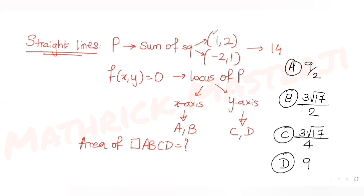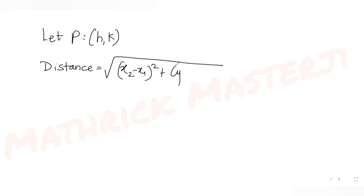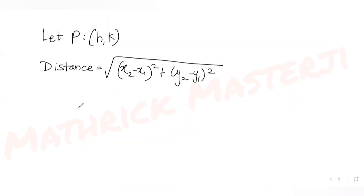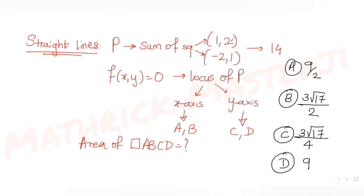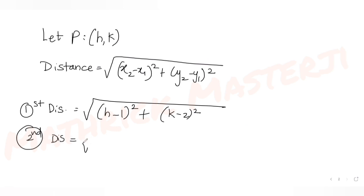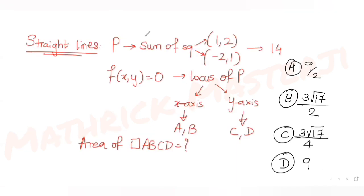We apply the distance formula: √((x₂-x₁)² + (y₂-y₁)²). The first distance of point P from (1,2) is √((h-1)² + (k-2)²). The second distance from (-2,1) is √((h+2)² + (k-1)²). These are the two distances we need to work with.